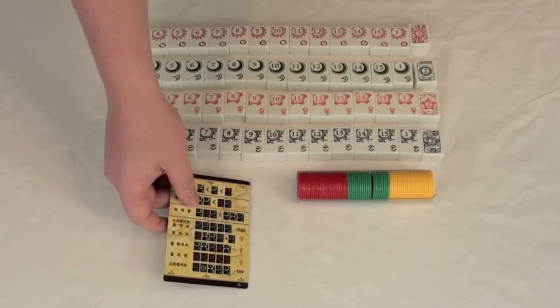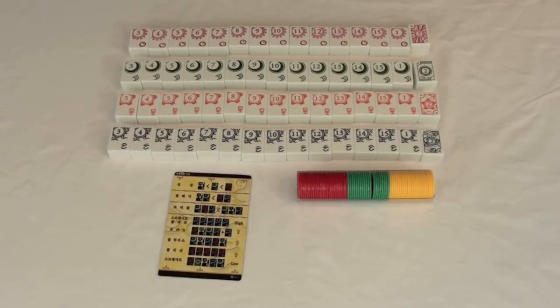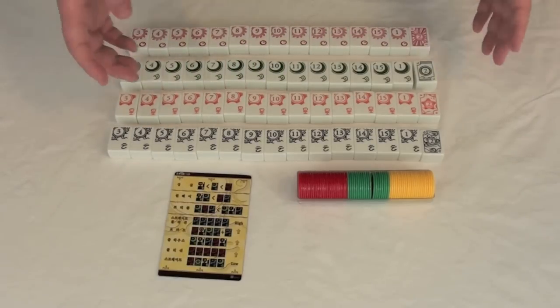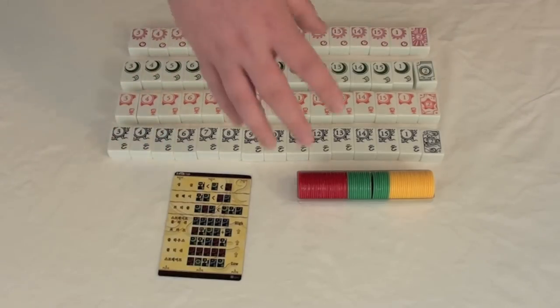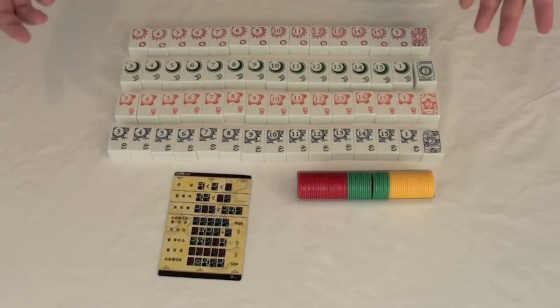You're going to lead one of these combinations, and everybody else must follow in kind or pass. Whoever plays the highest of that type of lead, so if you lead a single, whoever played the highest single, after you've gone around the table and everybody else has passed, whoever played the highest number or the highest combination is going to win. They're going to simply lead the next round.